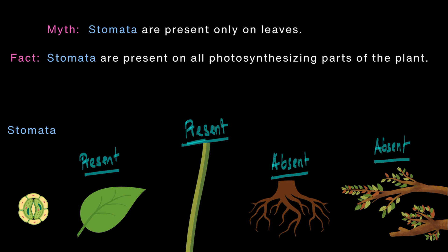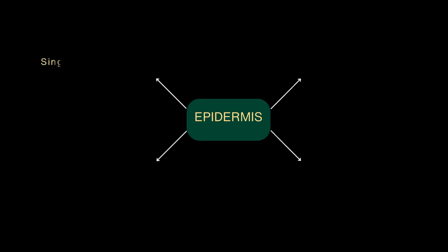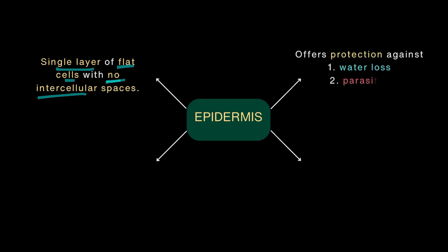Now, it is time for a quick recap. The epidermis is made up of a single layer of flat cells with no intercellular spaces. What is its main function? It offers protection against water loss, parasites and physical damage.